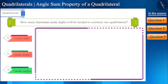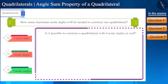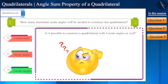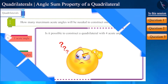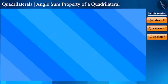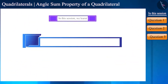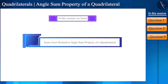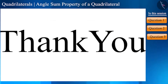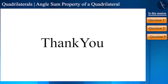But friends, is it possible to construct a quadrilateral from four acute angles? You can explore this with the help of your teacher and classmates. That's all in this session — today we discussed some facts related to the angle sum property of a quadrilateral. See you in the next video. Thank you.